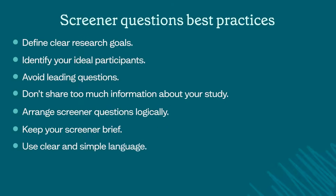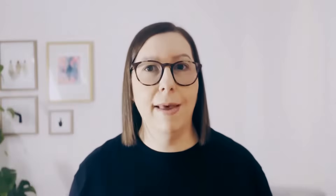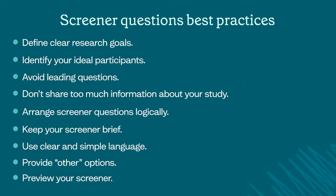When it comes to the questions themselves, use clear and simple language and be specific when describing how often something happens. Words like 'often,' 'rarely' and 'sometimes' can mean different things to different people. Instead, use specific numbers or ranges like 'once a week' or 'once a month.' Also, offer different options to choose from, like 'other,' 'I don't know' or 'none of the above' — this way, people don't have to pick an answer that isn't right just to move on. And finally, always preview your screener to make sure it's clear and easy to understand.